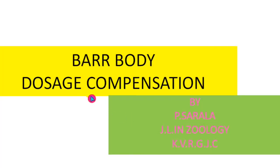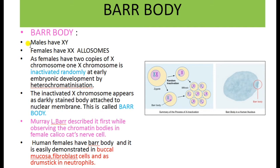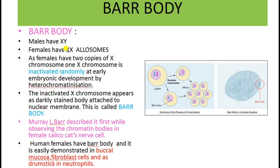Welcome to another class. In this class we are going to study about Barr body and dosage compensation. So what is meant by Barr body? We all know that males possess X and Y chromosomes and females have two X chromosomes as sex chromosomes. One of the X chromosomes in females is inactivated randomly during early embryonic development by a process known as heterochromatinization.